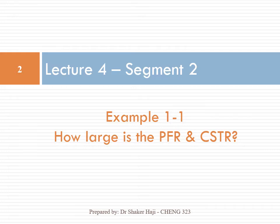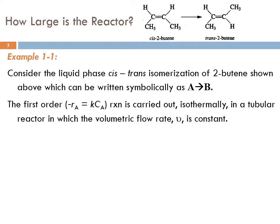Example 1.1. Consider the liquid phase cis-trans isomerization of 2-butene. The double bond starts on the second carbon, so it's 2-butene. This can be written symbolically as A goes to B. Whenever you see a reaction like A goes to B, that must be an isomerization reaction — not a combination or dissociation reaction — where the molar mass of A equals the molar mass of B.